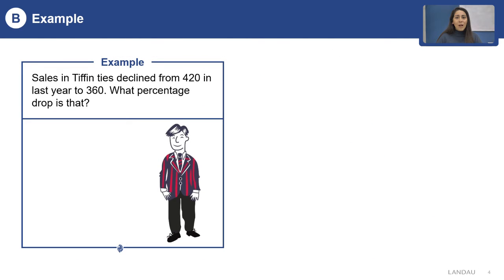It is time for us to practice. Let us do the first example together. Take your time to read the problem. As you can see, there was a decline from 420 to 360.